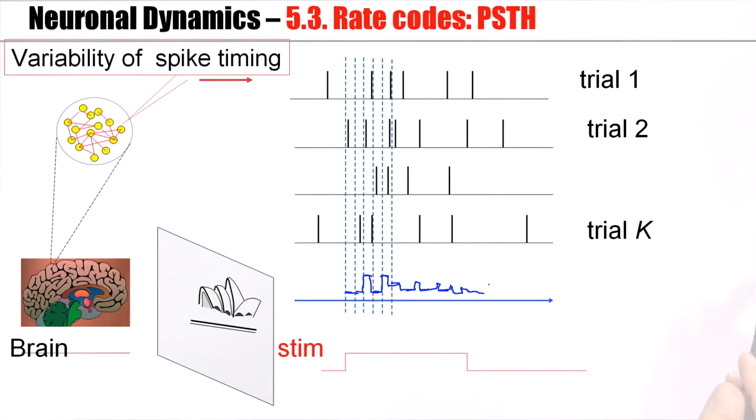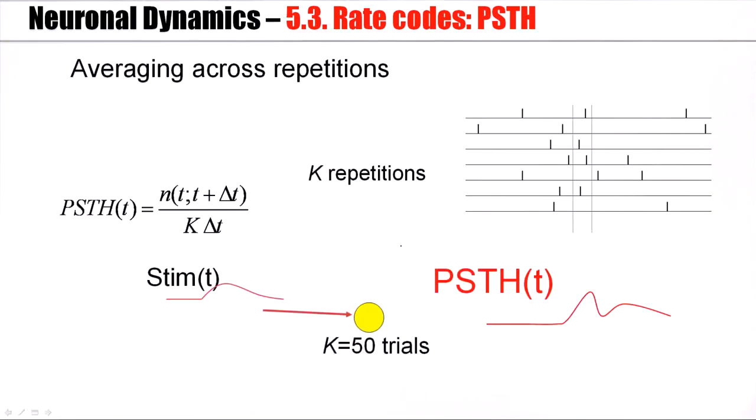This is the PSTH, the peristimulus time histogram. The histogram can start slightly before the stimulus. Formally, this means we count the number of spikes in a short time window delta T across K repetitions. We divide by K. We divide by the duration of our counting interval. And then this gives a rate measure. It's one over time. Units are hertz. It's a rate measure, but now with a temporal resolution defined by delta T. For example, if you pick delta T equal one millisecond, you have a very nice temporal response pattern.